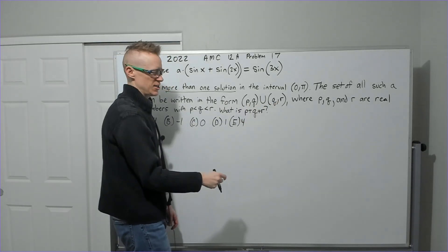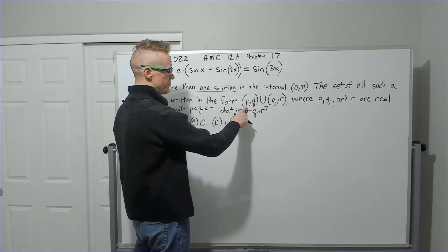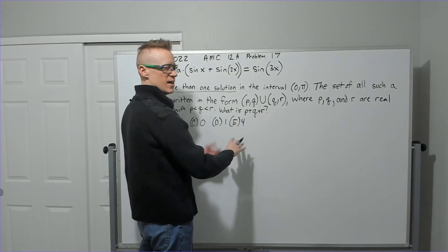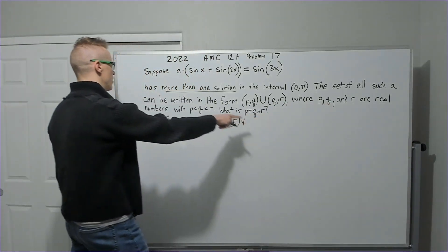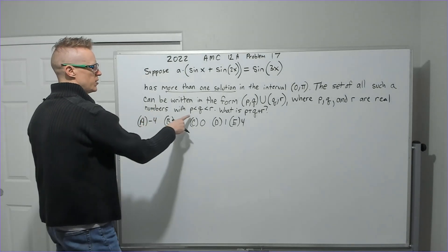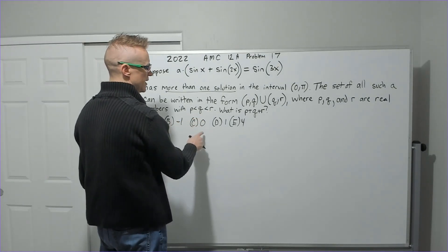basically interval notation. That's a union symbol from P to Q, union Q to R, not including any of those values, where P, Q, and R are real numbers, with P less than Q, less than R.